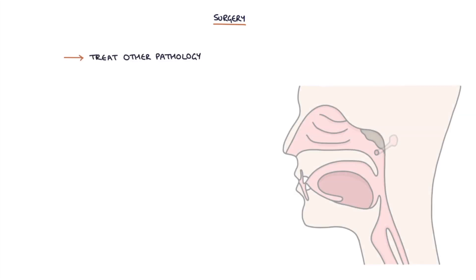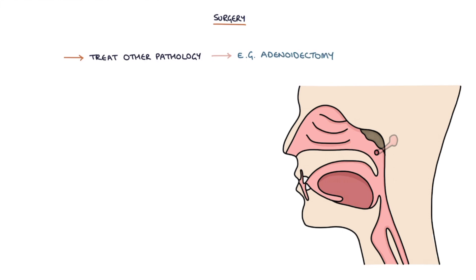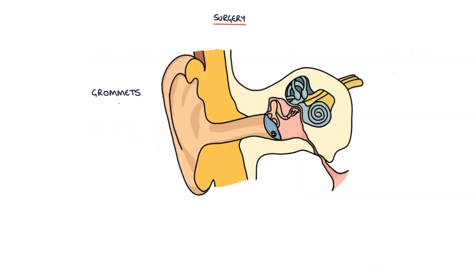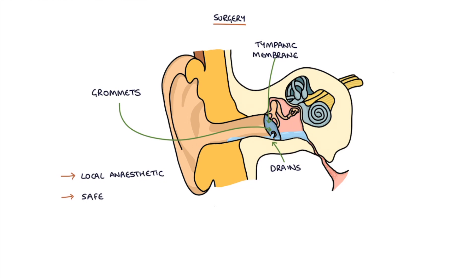Let's talk about surgery. There are three main surgical options for eustachian tube dysfunction. The first is treating other pathology that might be causing symptoms — for example, doing an adenoidectomy to remove enlarged obstructive adenoids. The second is to insert grommets. Grommets are tiny tubes inserted into the tympanic membrane by an ear, nose and throat surgeon, allowing air or fluid from the middle ear to drain through the tympanic membrane into the ear canal. Grommets are usually inserted under local anaesthetic. The procedure is relatively safe with few complications, and grommets typically fall out within 18 months.